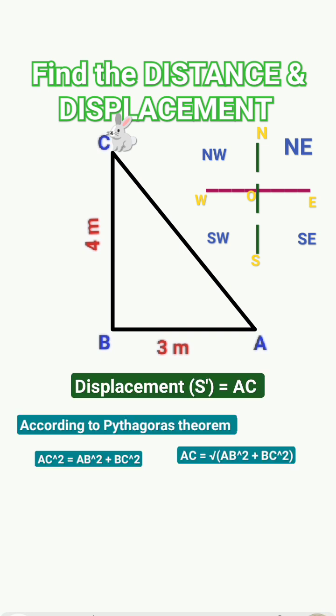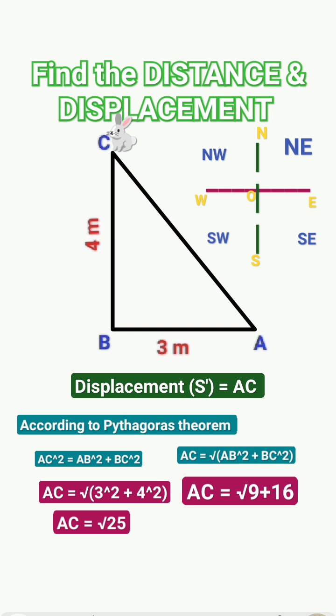So the direction, if you observe, is the northwest direction. By using Pythagoras theorem, we can find the displacement here. According to Pythagoras theorem, hypotenuse squared equals side squared plus side squared. Substitute the values 3 and 4, you will get AC equal to 5 meters.